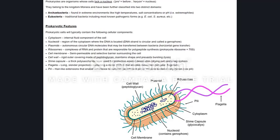Around the outside of them, they have this slime capsule, and that slime capsule is what it sounds like — a layer of chemicals they make to provide protection against the environment. They don't have skin, hair, or a tough hide like more complex organisms such as plants. So they have this slimy capsule to stop them from drying out or being exposed to temperature or pH changes. It acts as a protection.